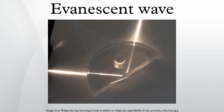In optics and acoustics, evanescent waves are formed when waves traveling in a medium undergo total internal reflection at its boundary because they strike it at an angle greater than the so-called critical angle. The physical explanation for the existence of the evanescent wave is that the electric and magnetic fields cannot be discontinuous at a boundary.